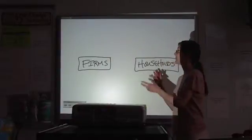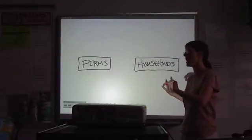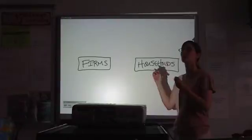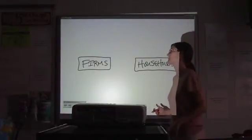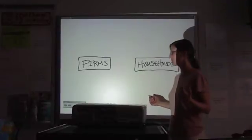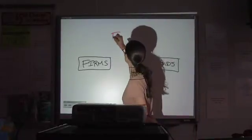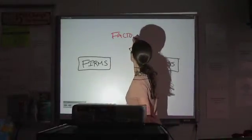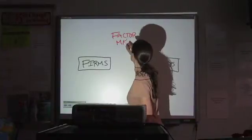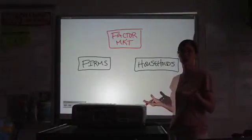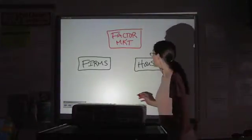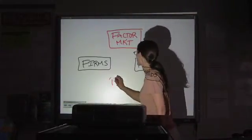Now, for them to interact using the circular flow model, we have to add a couple of markets for them to use as the means to interact. So we're going to use the factor market. Factor market or the resources market, if you want to call it that. And the product market.